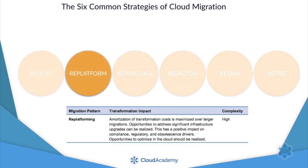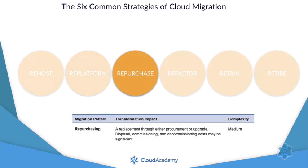The second cab off the rank is re-platforming, which is a modified lift and shift. Re-platforming involves making some optimizations to the application during the migration stage. The third R is to re-purchase, which is sometimes referred to as drop and shop, and this refers to the decision to move to another product. This may mean ending existing licensing and re-purposing services on a new platform or service. Examples of this may be a CRM system or an industry-specific application not designed to run on cloud infrastructures. This is often not necessary with bespoke applications written with modern application code, as it is possible to transport the code from one provider to another. The re-purchase strategy is often applied when using a proprietary database platform or proprietary product.